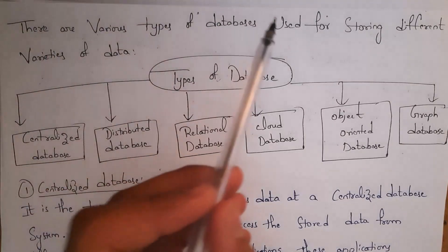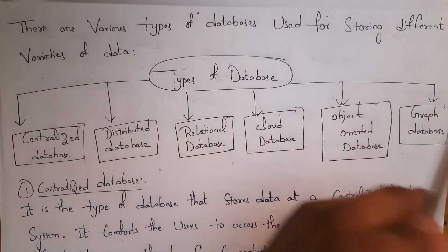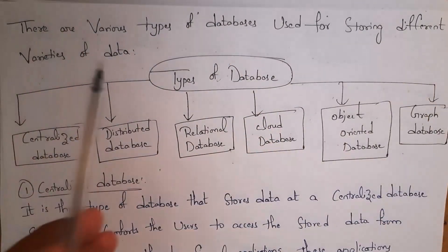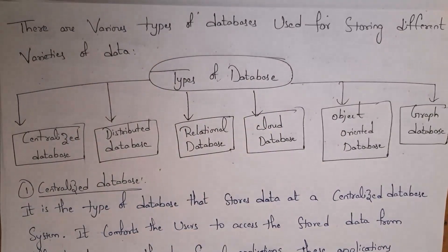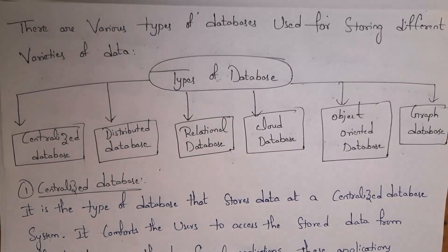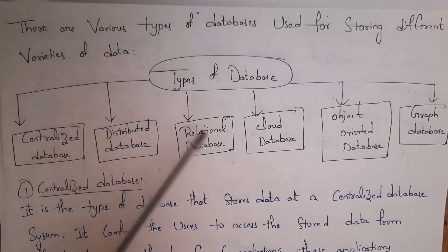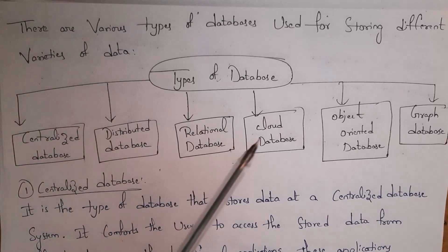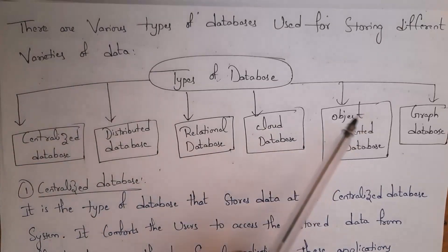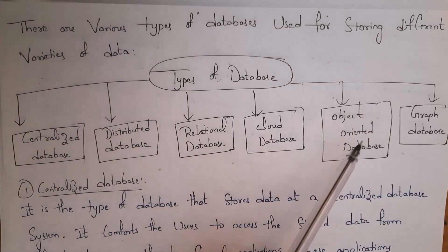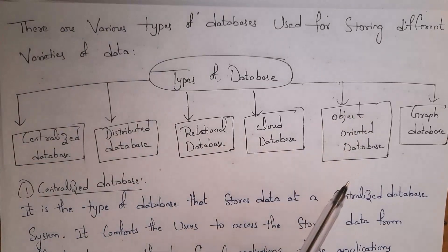Next I will explain various types of databases. There are various types of databases used for storing different varieties of data. The types include: centralized database, distributed database, relational database, cloud database, object-oriented database, and graph database.